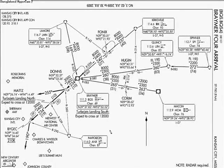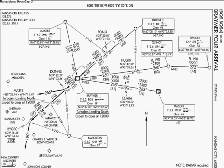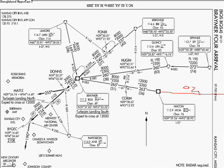This is the Braemer Arrival, which is the one we filed in our example flight plan earlier in the first tutorial. We're using the Macon transition, which is this one right here. The Ozark 3 departure that we used from St. Louis backs right up to that, so it would be flying in on that.